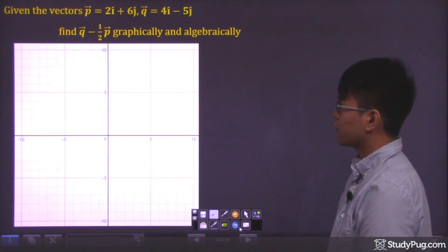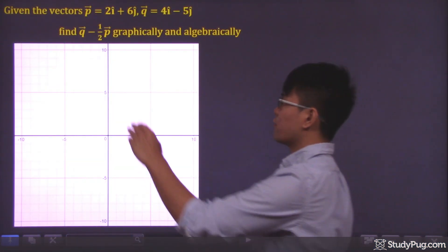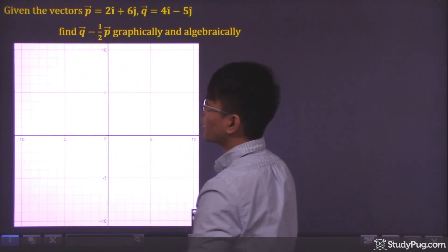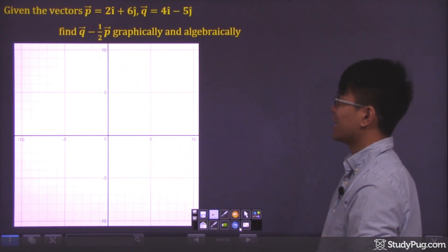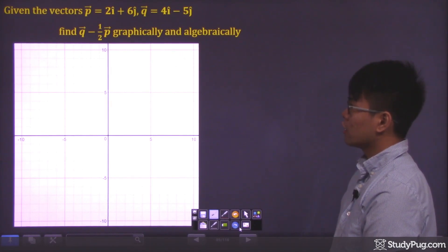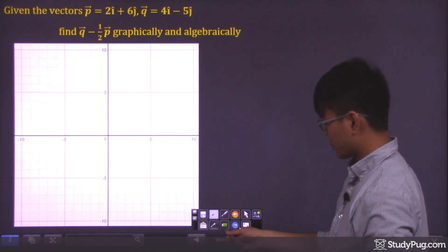We have two vectors here, vector p and vector q. We want to find vector q minus one half of vector p, graphically and algebraically. So let's quickly plot those vectors first.